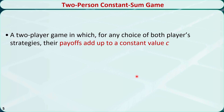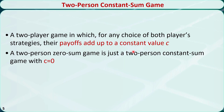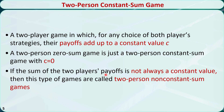The two-person zero-sum game is a special case of the two-person constant-sum game. A two-person constant-sum game is a game in which, for any choice of both players' strategies, the sum of the two players' payoffs is the constant value C. A two-person zero-sum game is just a two-person constant-sum game with C equal to 0. If the sum of the two players' payoffs is not a constant value, then this type of game is called a two-person non-constant-sum game.